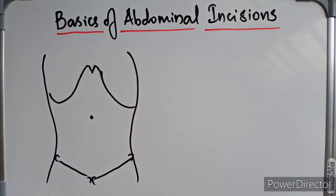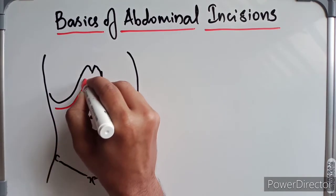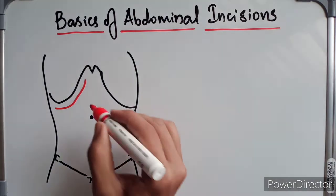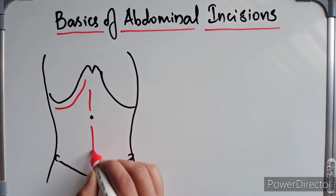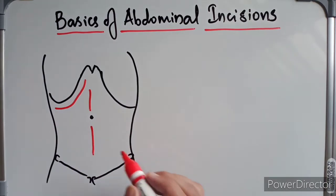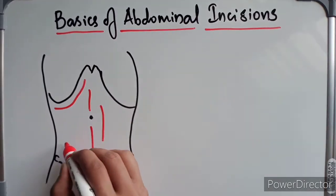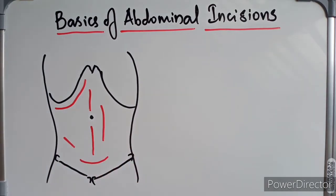What are the types of incisions? One we have along the right costal margin — this one is called the Kocher's incision. We have the median incision: upper midline incision and lower midline incision. We have the paramedian incision, the McBurney's incision, and lastly the transverse incision.